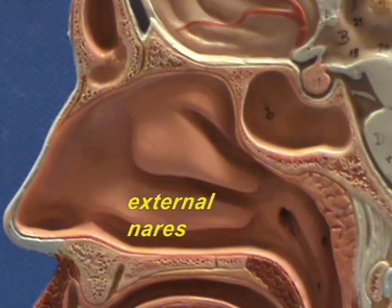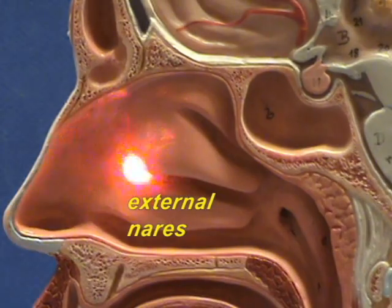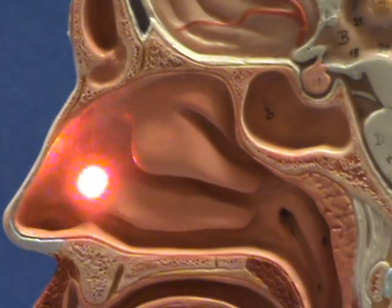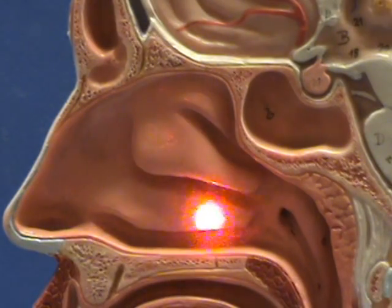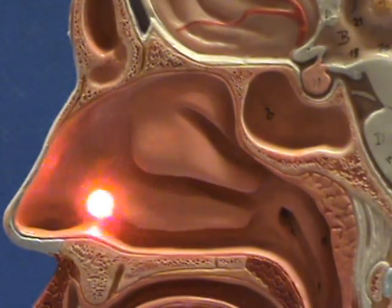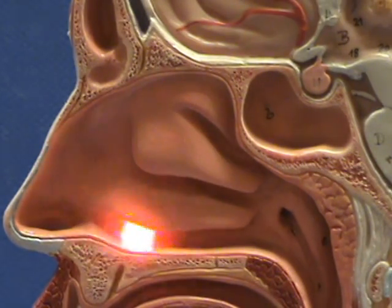Air enters through the nostrils and goes into this cavity, which is one half of a two-compartment cavity separated by the nasal septum, which is removed here.